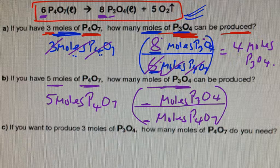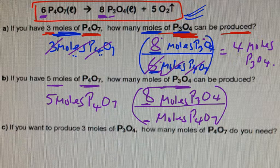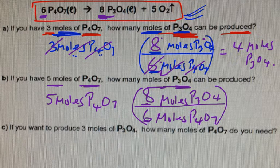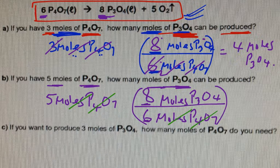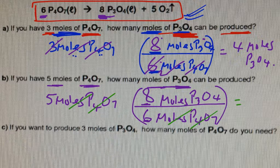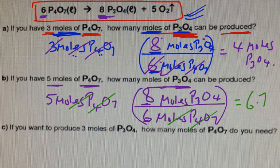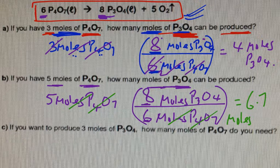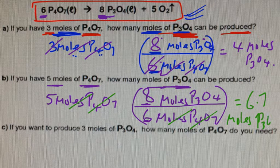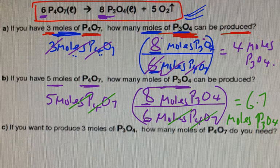Now once again, you need your coefficients from the balanced equation to put in front here and here. So as before, you put 8 in front of the P₃O₄ because that's what's in front of P₃O₄. You put a 6 right here. Now what happens next? The moles of P₄O₇ cancel. You do your multiply cross. 5 times 8 is 40 divided by 6 is approximately to 1 decimal place, 6.7 moles of P₃O₄. And you're done.